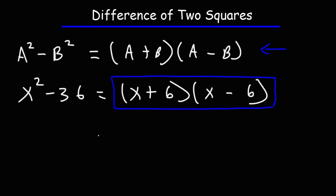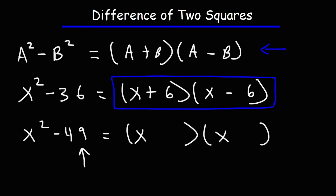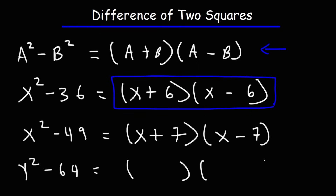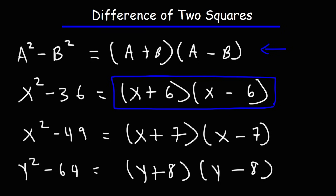Let's try another example. Factor x squared minus 49. The square root of x squared is going to be x, and the square root of 49 is 7. So we're going to have x plus 7 times x minus 7. Now try y squared minus 64. The square root of y squared is y, and the square root of 64 is 8. So we're going to have y plus 8 times y minus 8.